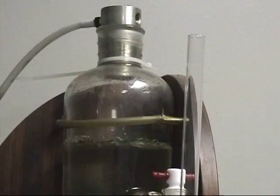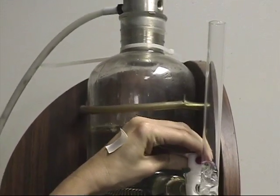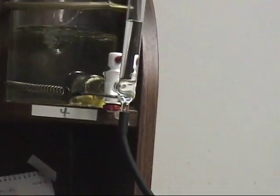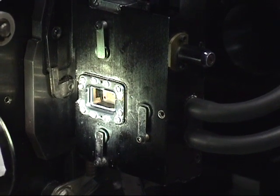This printer is called a liquid gate or wet gate printer because it uses a clear chemical, which flows down to the gate and fills in base scratches and thin emulsion scratches without distorting the image on the old film.